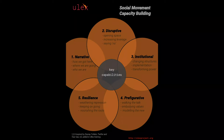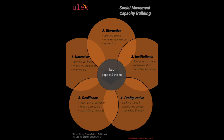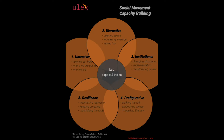The next two are the ones Ulex adds, which aren't often given as much attention. The fourth is prefigurative capability — prefigurative is a fancy term for walking the talk. It's about how we within our movements embody our values and model the kind of new social relations we're trying to produce in the world — not just creating that in the future, but embodying it now in how we struggle together.